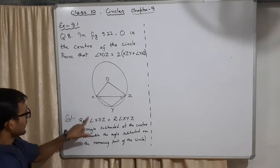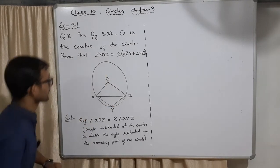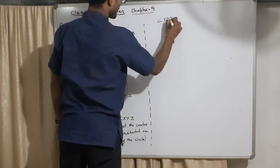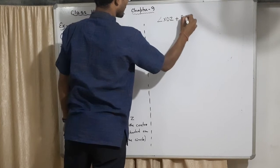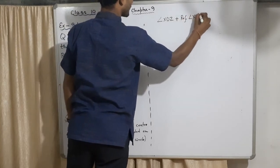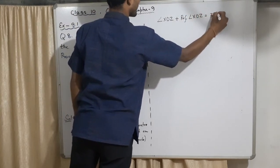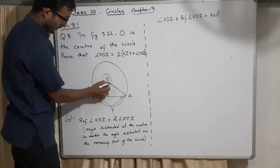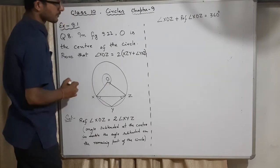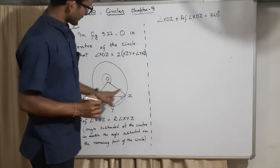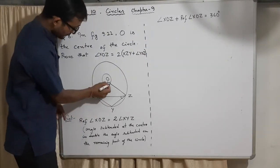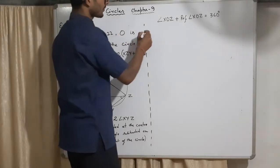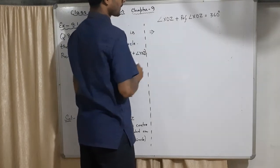Now other than reflex XOZ is what we need. Now what I'll do is angle XOZ plus reflex angle XOZ equal to 360 degrees. This is that whole angle from here to here and from here to here.